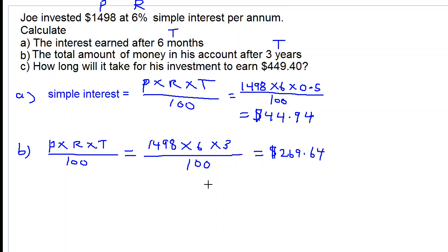The total amount of money now, total amount will be equal to the principal plus the interest, which is 1498 plus 269.64, giving us $1767.64.